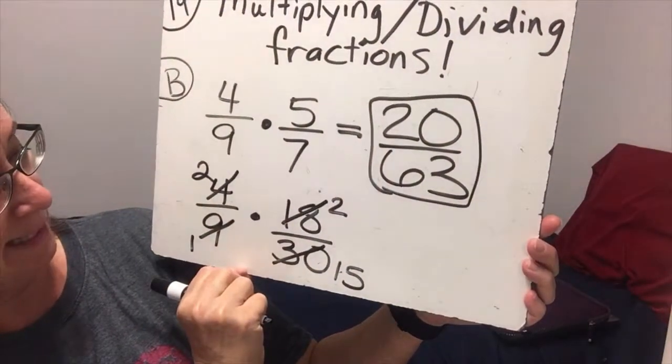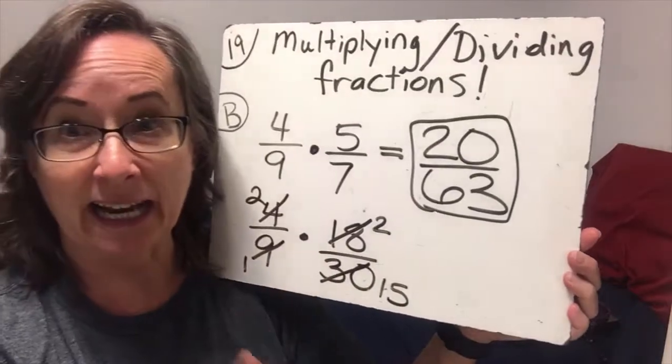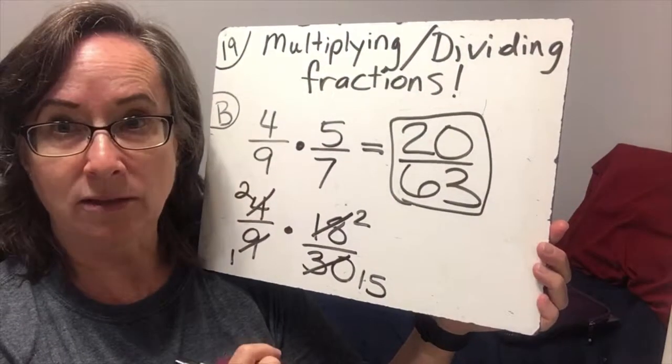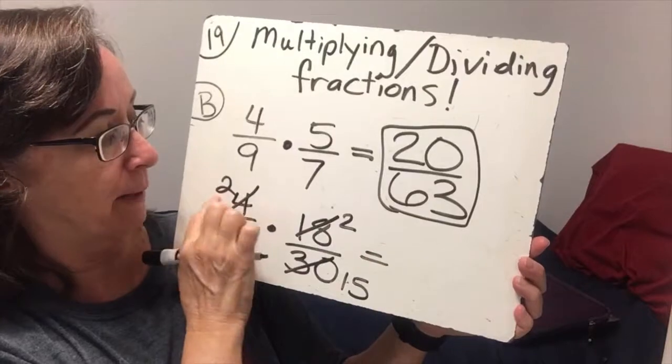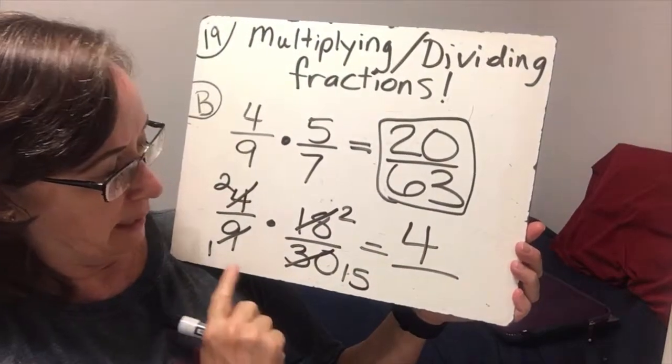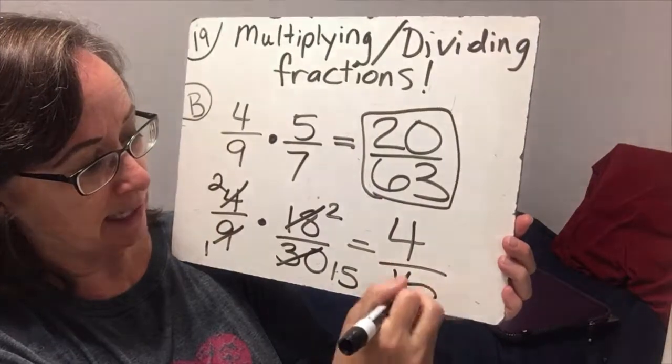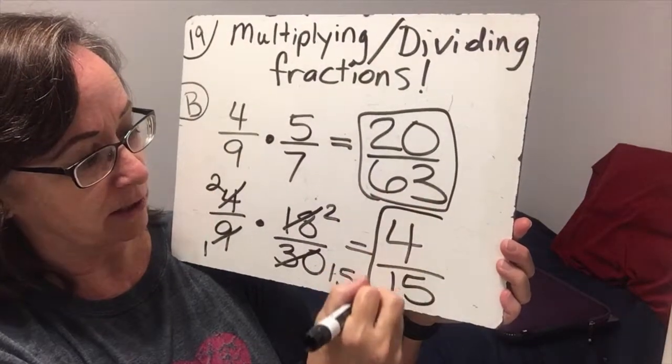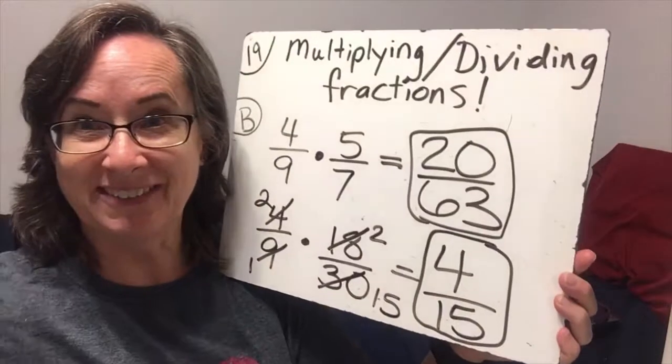So I take a good look at that, and I say, yes, there's no other thing that I can do to cancel or simplify. So now I'm going to multiply across the top. 2 times 2 is 4, and across the bottom. 1 times 15 is 15, and my final answer is 4 over 15.